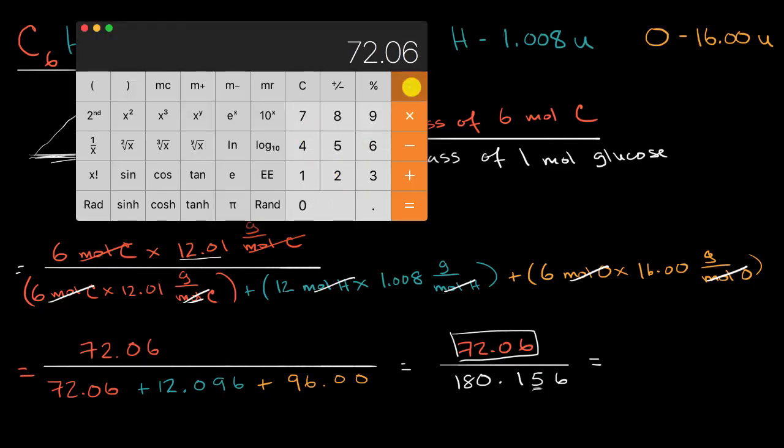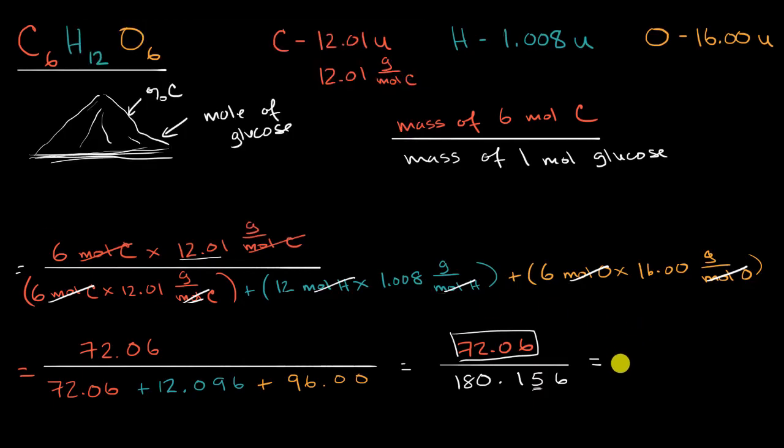72.06 divided by 180.156 is equal to, and if you round to four significant figures, this will be 0.4000. So this will be, I'll say, approximately equal to 0.4000. Or we could say 40% or 40.00% carbon by mass when we round to four significant figures. And we are done.